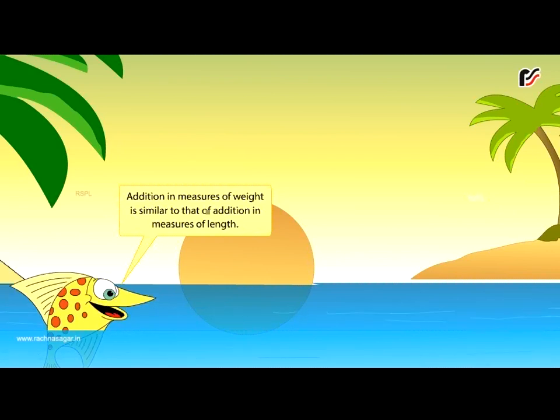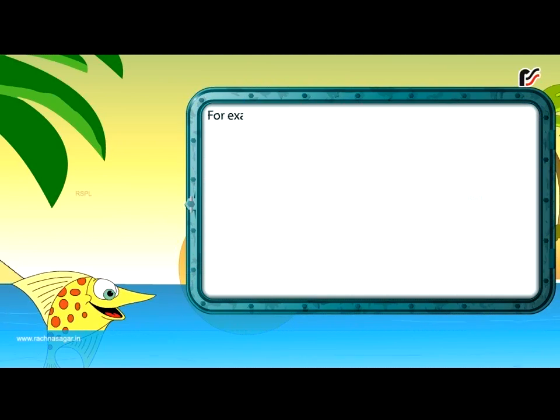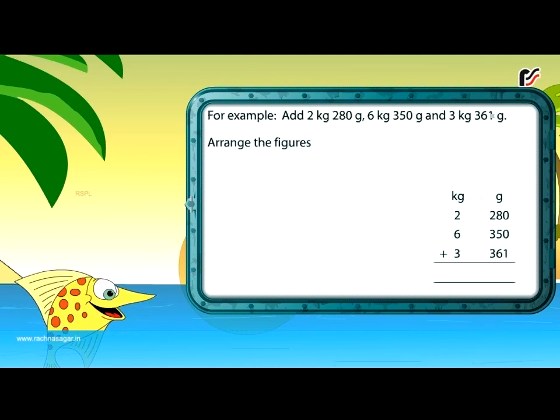Addition in measures of weight is similar to that of addition in measures of length. For example, add 2 kg 280 g, 6 kg 350 g, and 3 kg 361 g. Arrange the figures in kg and g columns respectively.